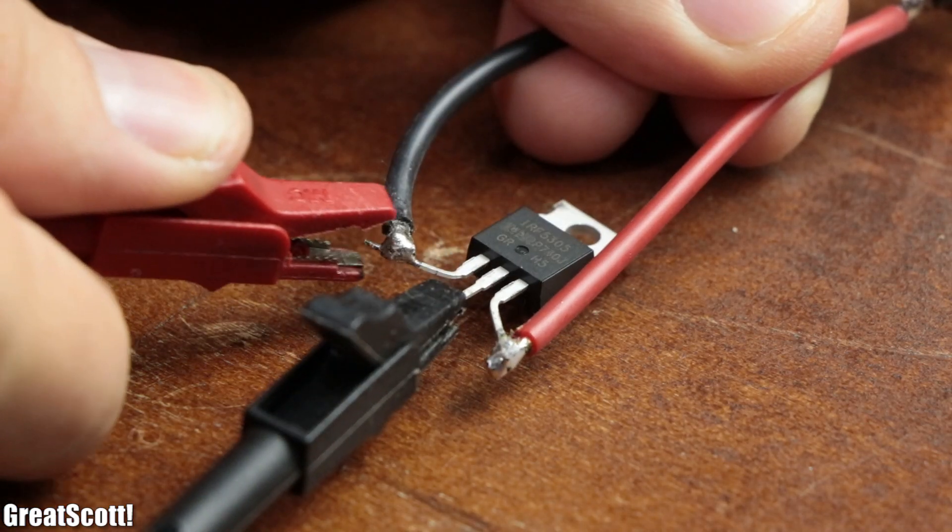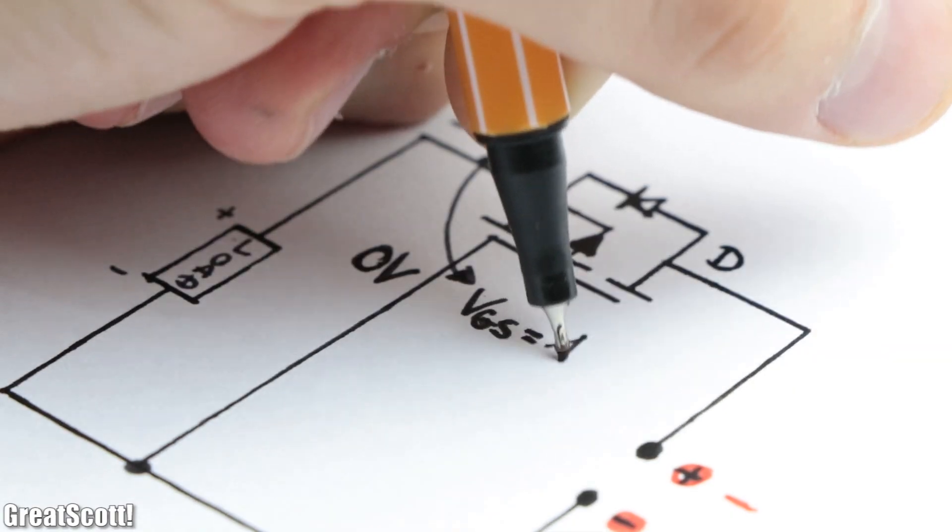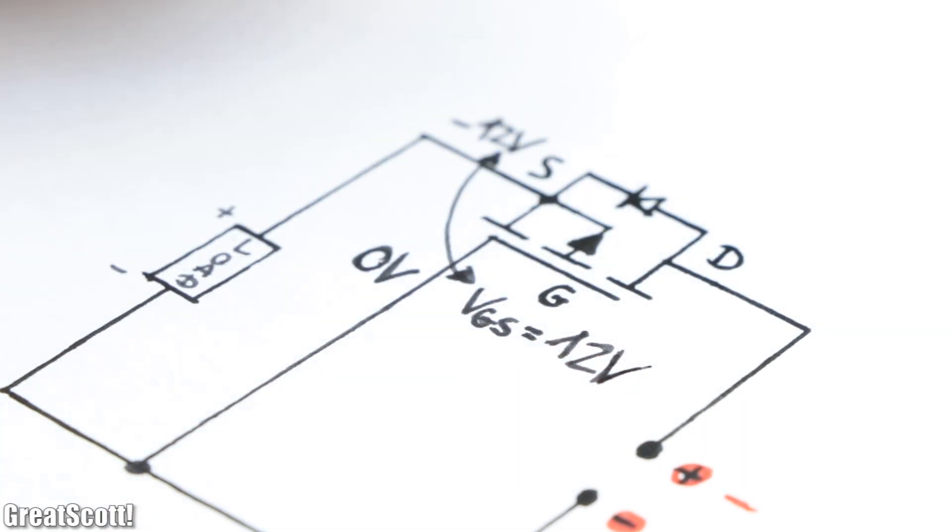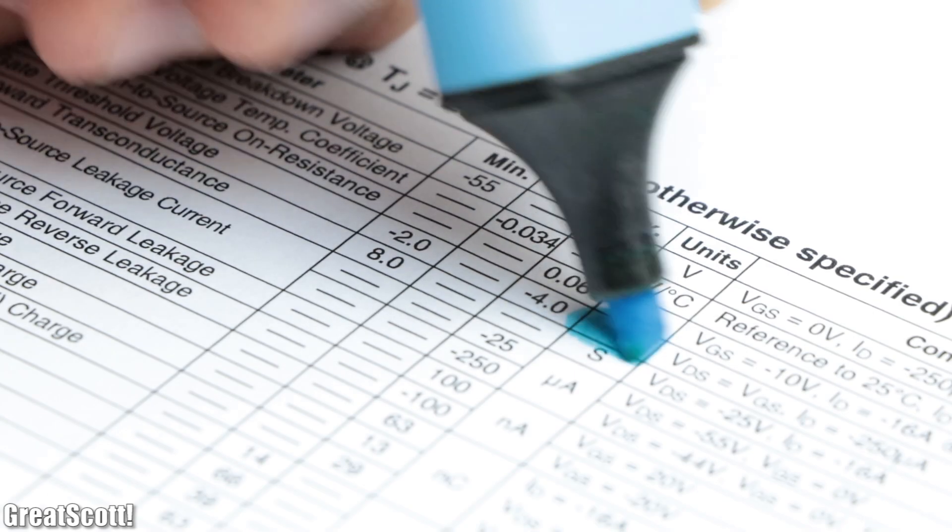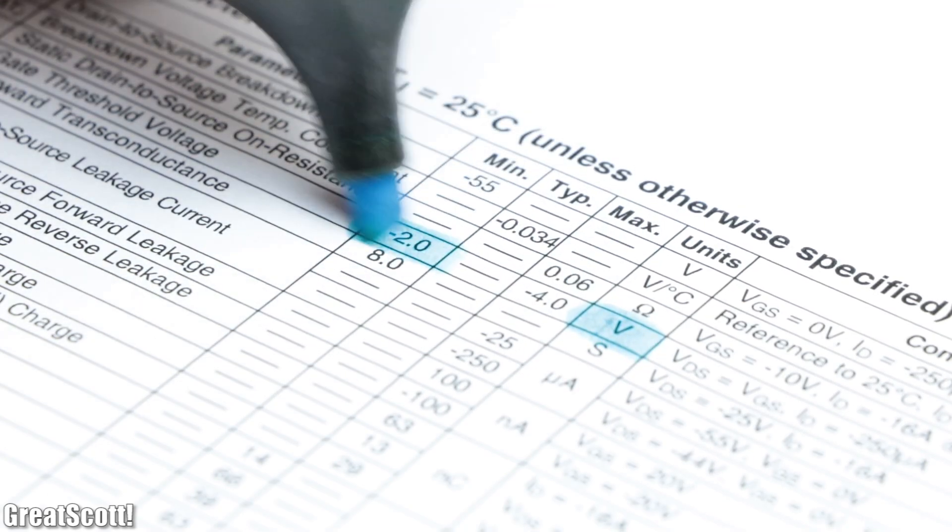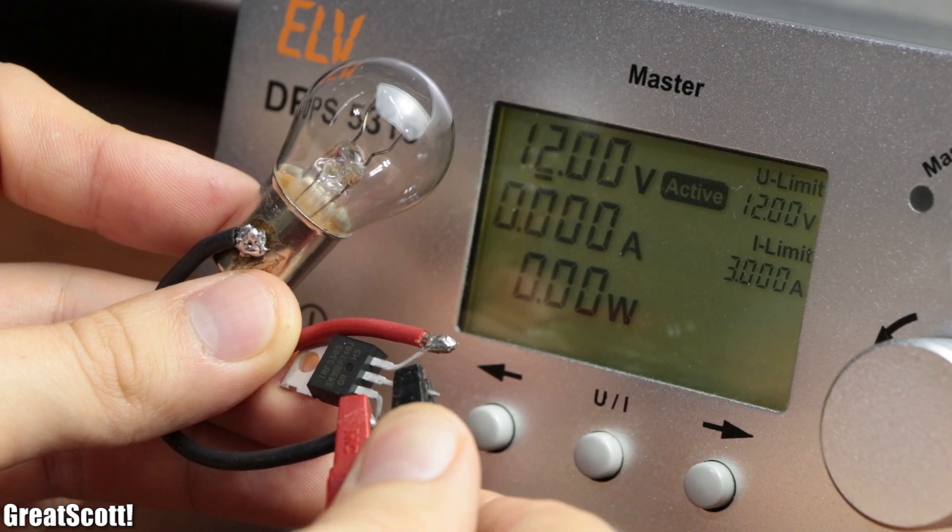Now when the voltage is applied the wrong way, we would get a theoretical gate to source voltage of plus 12 volts, but the MOSFET only turns on with voltages lower than minus 2 volts, which means it will stay off.